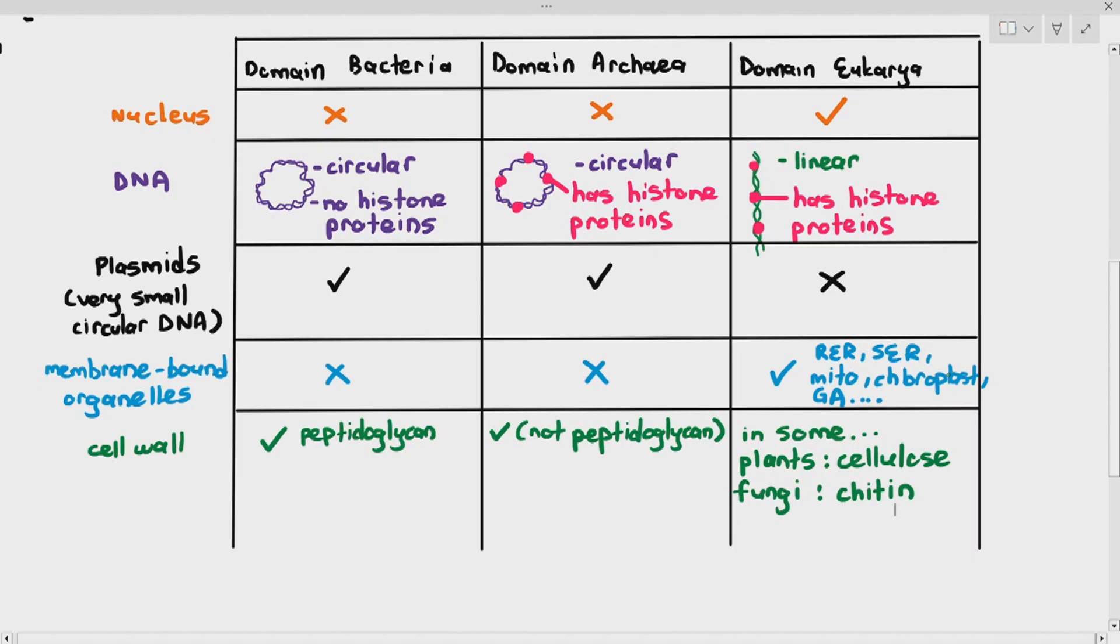For eukarya, only some eukaryotes will have cell walls. For example, plants, they have something known as the cellulose cell wall. The fungi, which falls under eukaryotes as well, they'll have something known as the chitin cell wall. Animal cells which fall under eukaryotes, domain eukarya, we don't have cell walls.